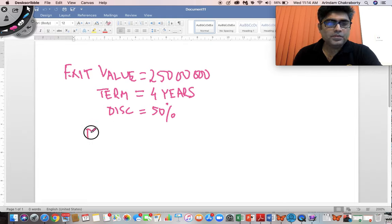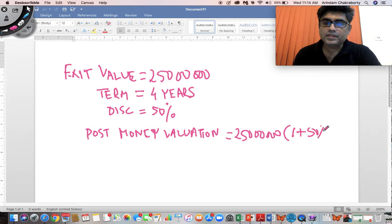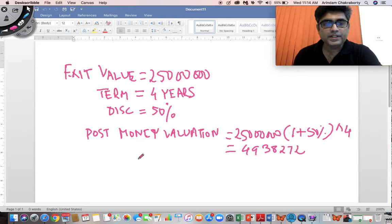Okay, so then the post-money valuation in that sort of situation, how is it going to be computed? The post-money valuation in that case is going to be computed as 250 crores into 1 plus 50 percent to the power of 4. So that would give us a value of roughly around 4,93,827, which is called the post-money valuation figure.